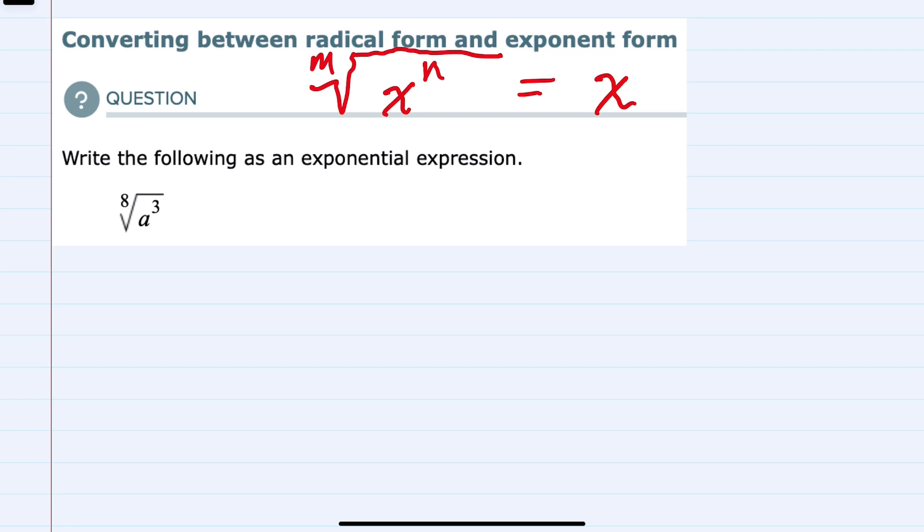in this case the n, is the numerator of our exponent, and the variable on the outside of the radical is the denominator of our exponent.